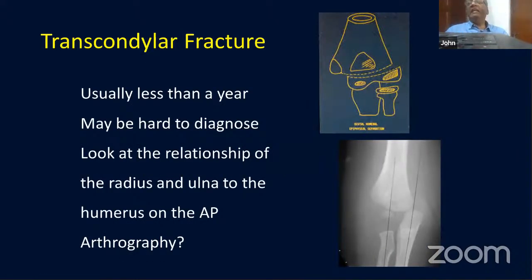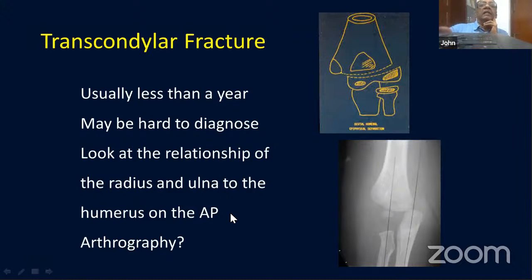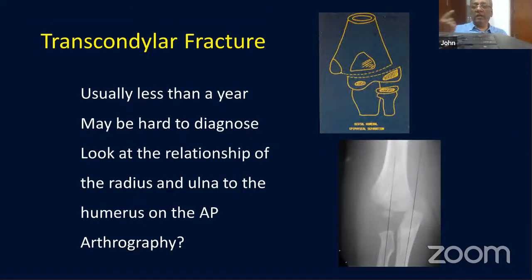In very young children under one year old, watch out for transcondylar fractures. Because the trochlea is not visible at this age, it gives the appearance of a dislocation. However, elbow dislocation typically shows posterolateral displacement, while transcondylar injury in small children usually displaces medially. Importantly, the radial head still lines up with the capitellum in transcondylar injuries, distinguishing it from dislocation. These should be reduced and fixed with thin K-wires.